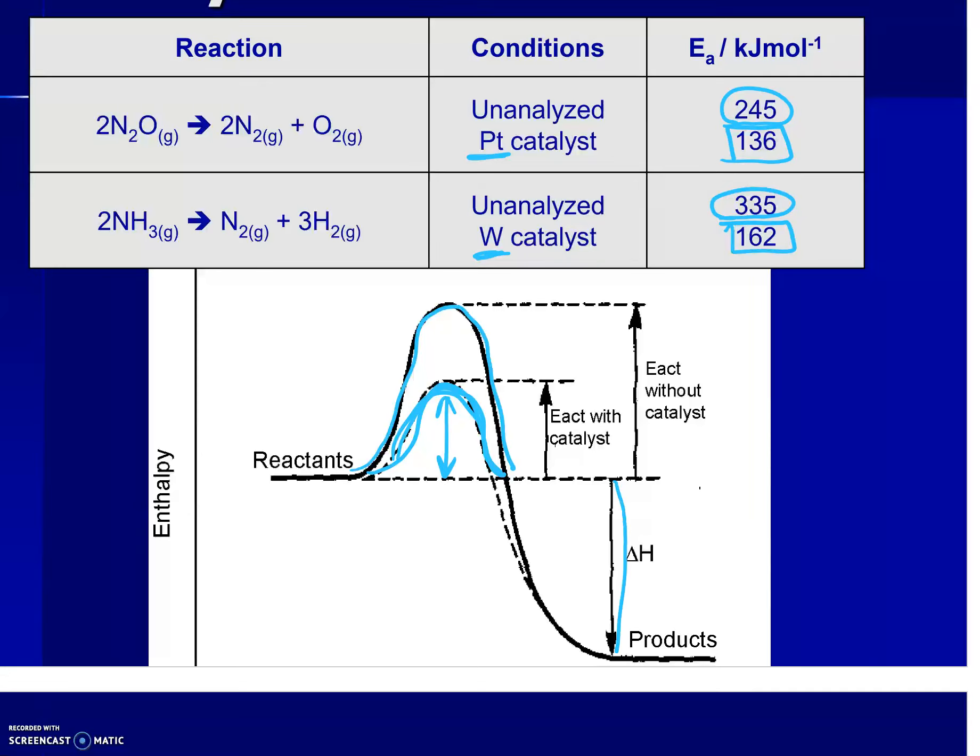And this reaction, just for review, notice drawing that arrow, the arrow points down. Therefore, delta H is negative, which means it is an exothermic reaction.